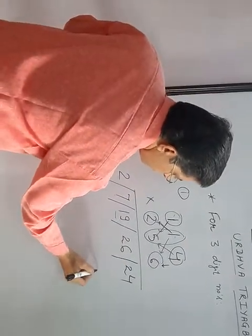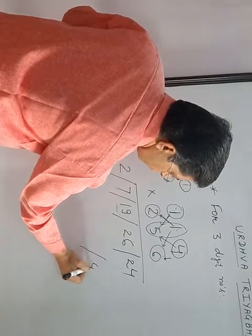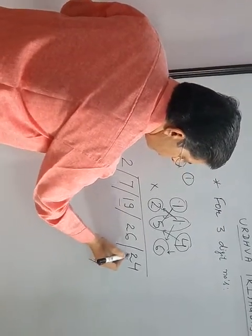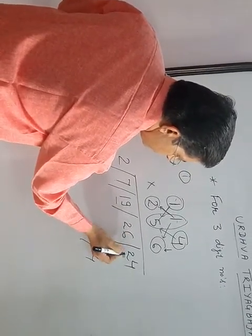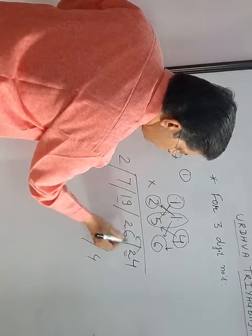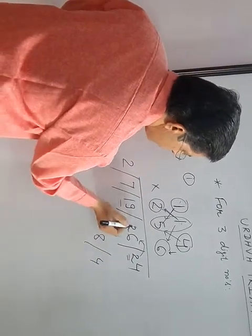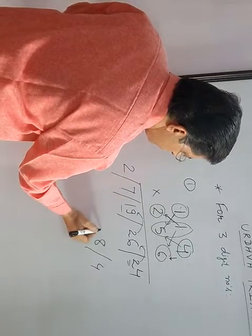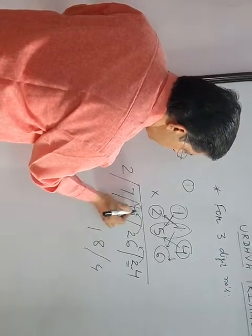Then what to do? 4. 2 take carry like this. 2 will go this side. 6 plus 2 will be 8. Here, 9 plus 2 is 11. 1 carry.